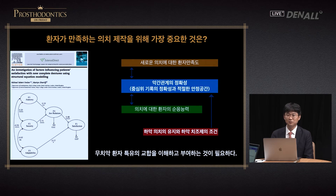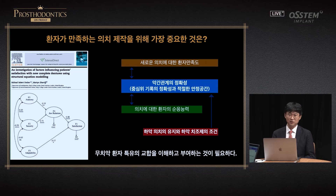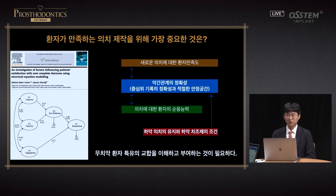Many papers talk about factors influencing patient satisfaction with new complete dentures. Most importantly: finding a stable condylar position and establishing occlusal position. Clinically, we often see patients use the dentures pretty well as long as the chewing position is right, even though the form is not ideal. It is reported that a stable denture position is important to appropriately obtain occlusion.